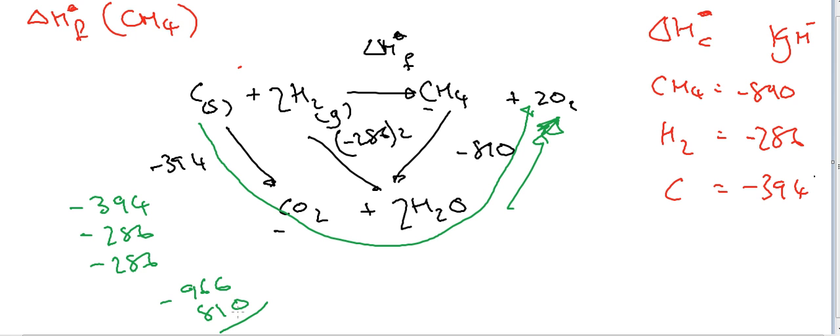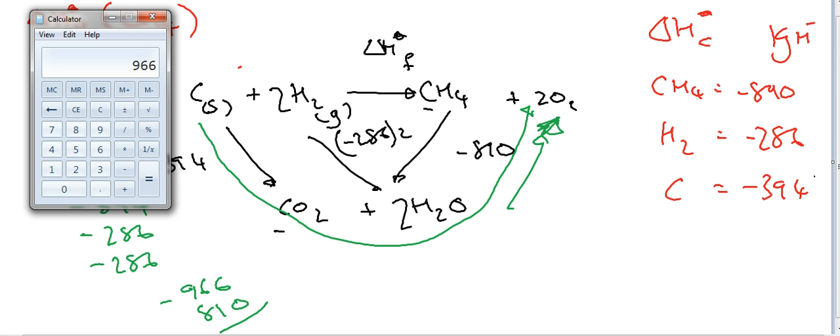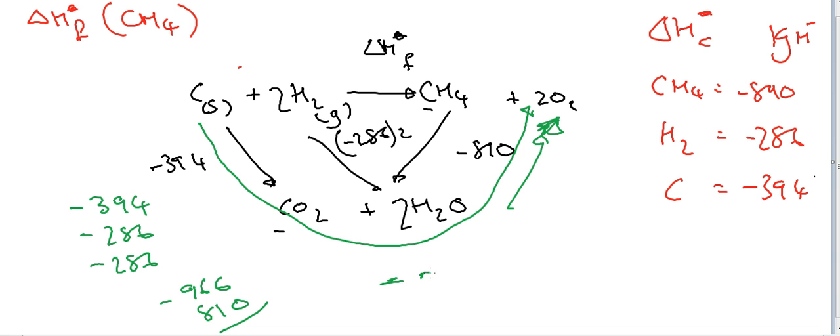And that should give us minus 810. 100. So minus 156 kilojoules. Which is the standard enthalpy of formation of methane. And there you go. That's the last one I'm doing today.